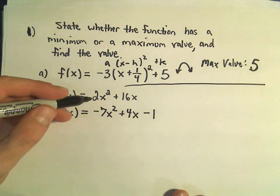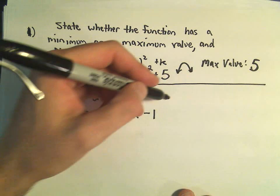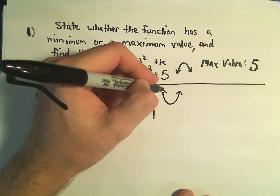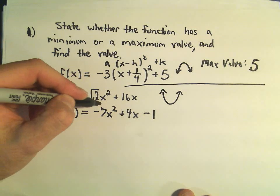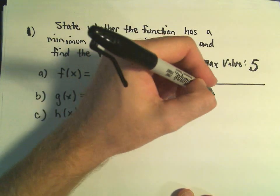Alright, so part b here, we've got 2x squared plus 16x. Since this opens upwards, because again, the a value here is positive, I know that we're going to have a minimum value.